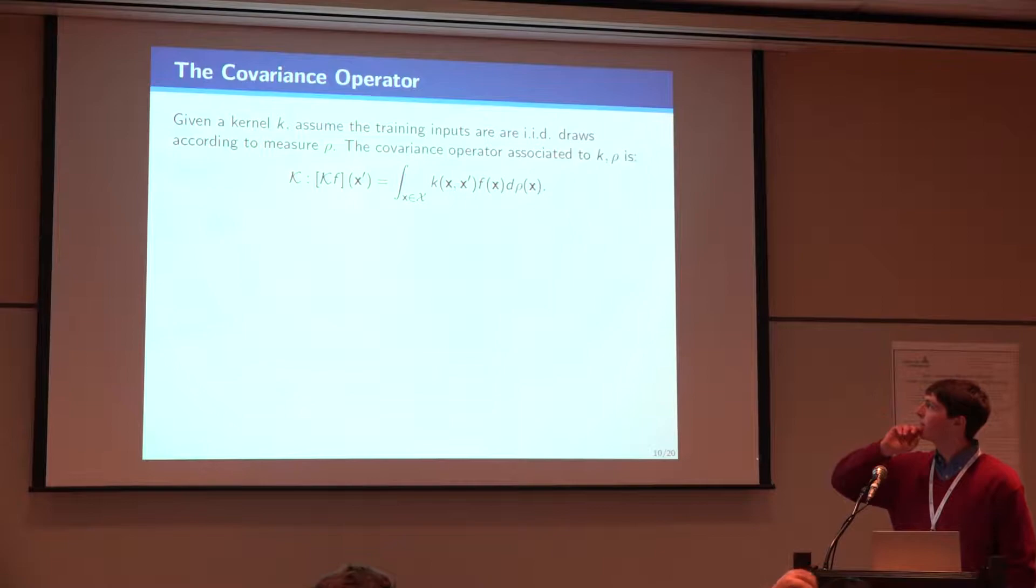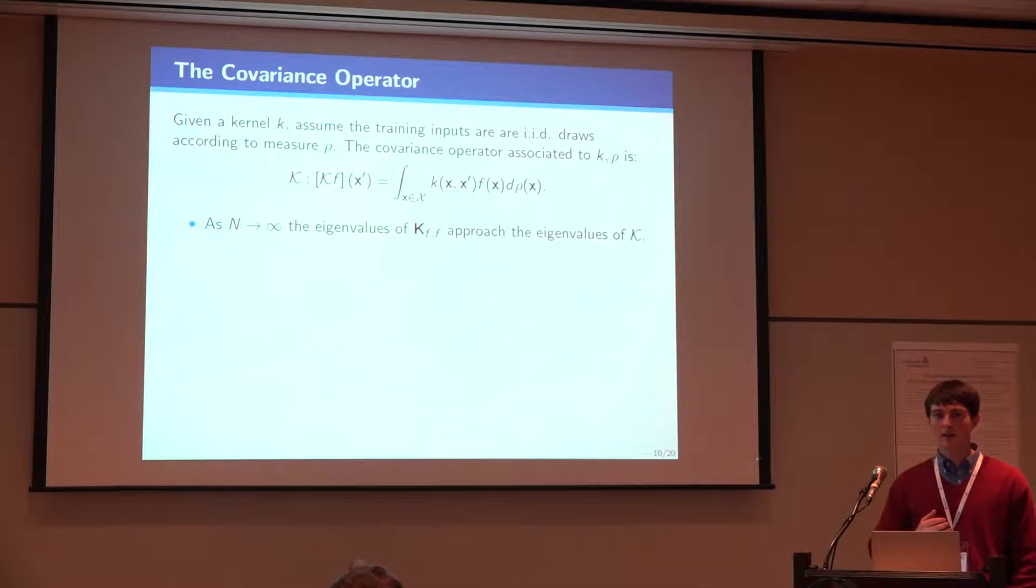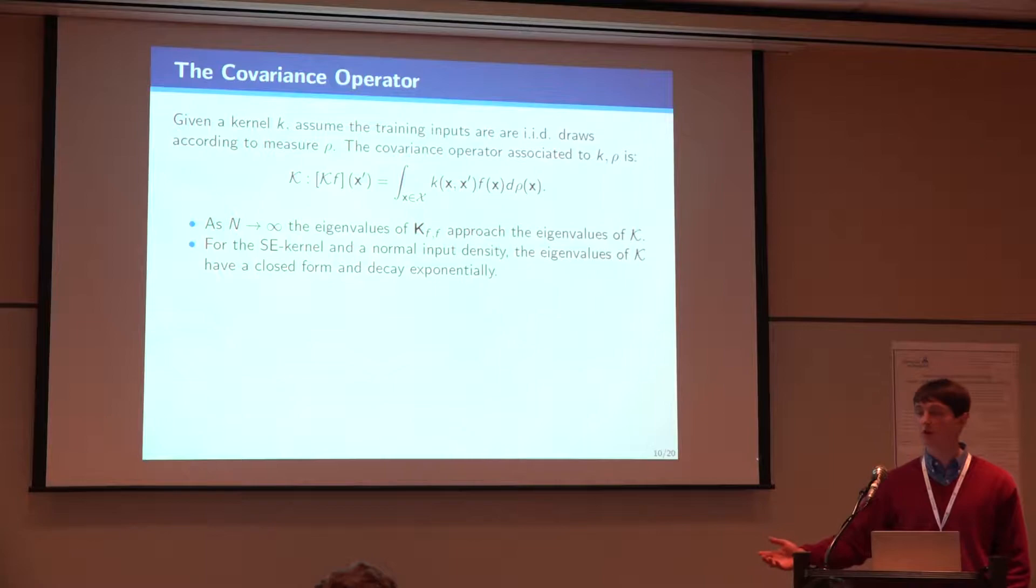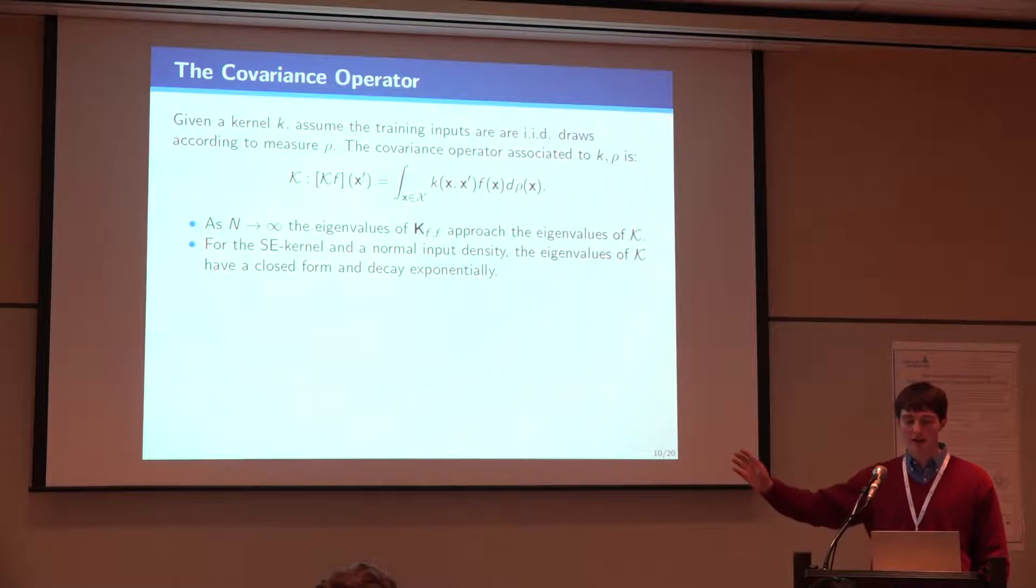Before doing that, we're going to talk about this linear operator, which I'll refer to as the covariance operator, and it's associated both to the kernel and some input measure, rho. Basically, the intuitive thing to think of is that as we get a lot of data, if the data is coming IID from the measure rho, then the empirical covariance matrix is converging to this operator.